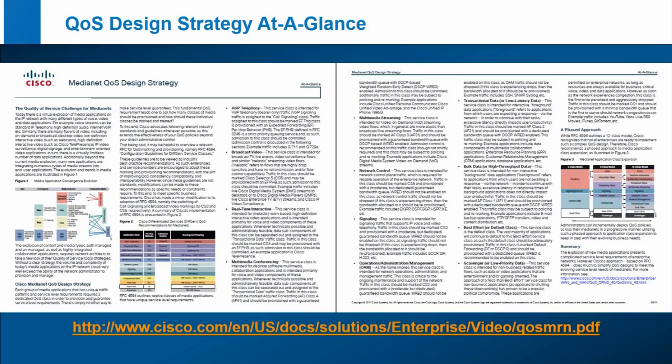These slides will be provided to you. There's a great reference on Cisco.com — available on CCO internally — that describes the full overview: application explosion, collaboration guidance, and the different RFCs for the 5, 8, and 12-class models. It's a really handy reference.